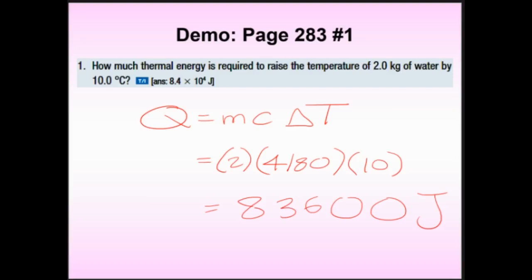Constants don't count toward sig figs. So we only care about the measured values — mass and delta T — and the lower precision is two sig figs. So we round to two sig figs. 83,600 rounds to 84,000 joules. That's 84,000 joules to heat two kilograms of water — roughly two liters, or about three 700 mL bottles — by ten degrees Celsius.